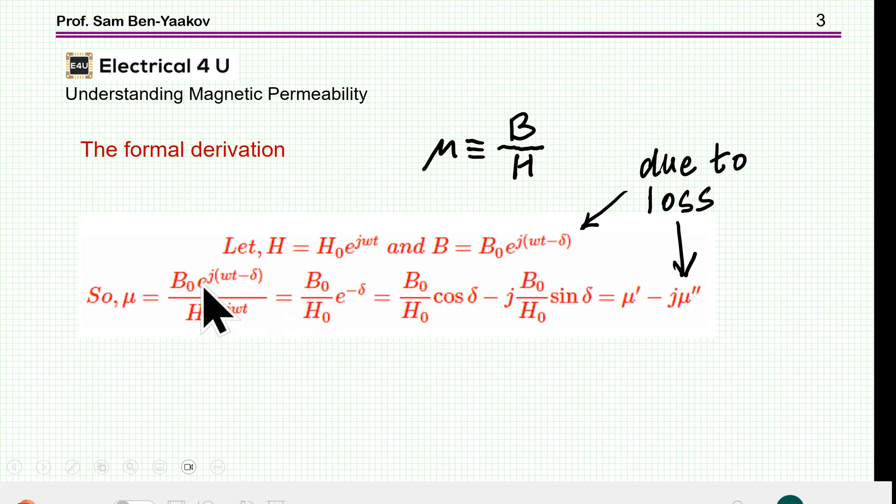Now, when you then take the ratio between these two, you end up with this expression, which can be described in a compact way, like this. And this is exactly what we are talking about. So we have a real part of the permeability, this is this part here. And then we have an imaginary part of the permeability, this part here. So this is an expression or an outcome of the fact that there is a phase shift between B and H.